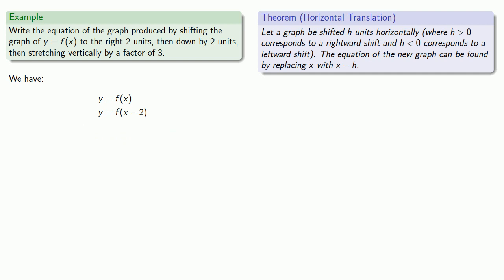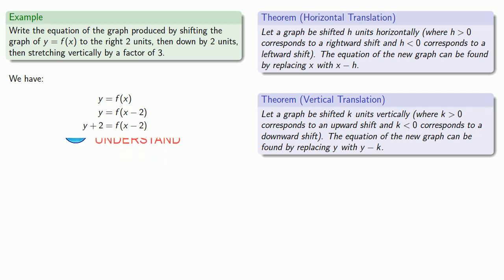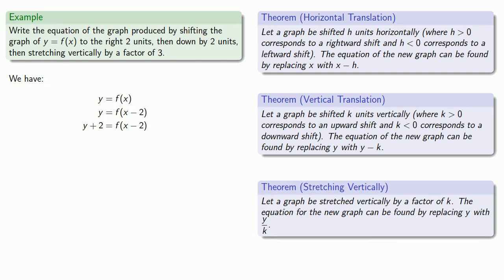Next, we're going to shift the graph down by two units — that's a vertical translation. Since we're going down by two units, we can form the equation of the new graph by replacing y with y plus two. And then finally, we're stretching vertically by a factor of three — that's a vertical stretch. We can find the equation of the new graph by replacing y with y over three.